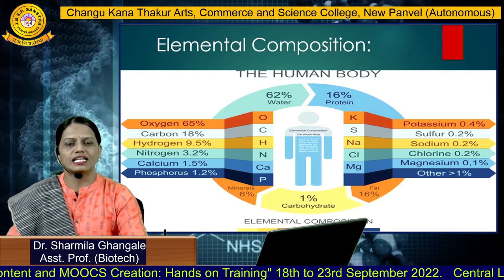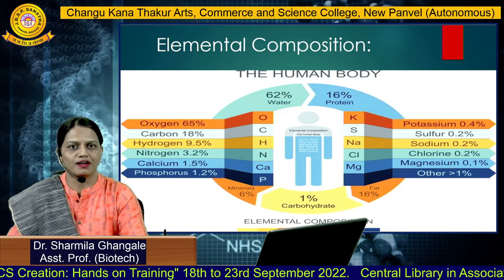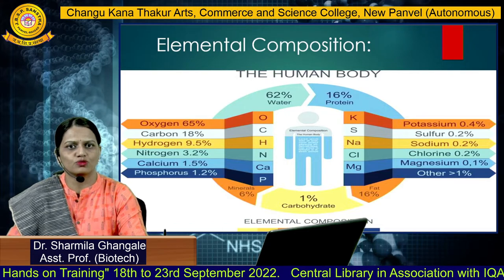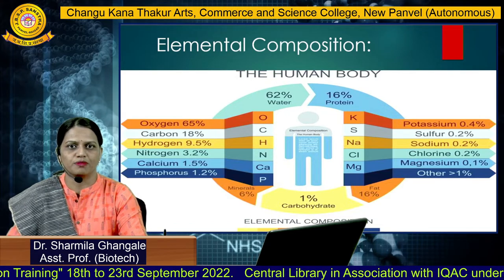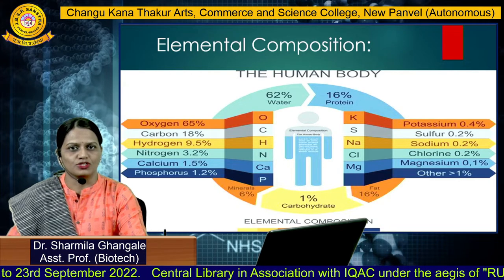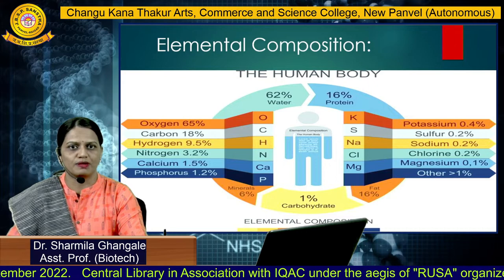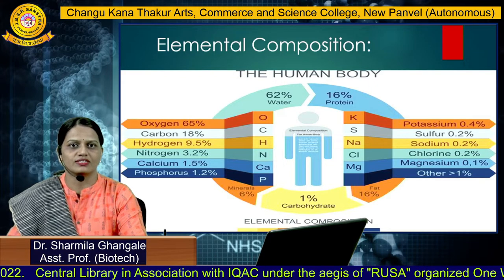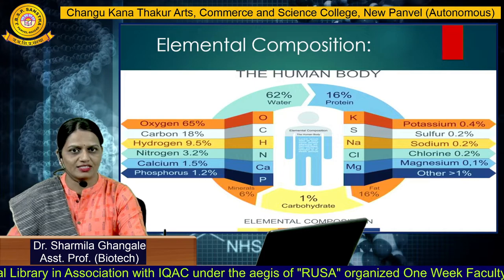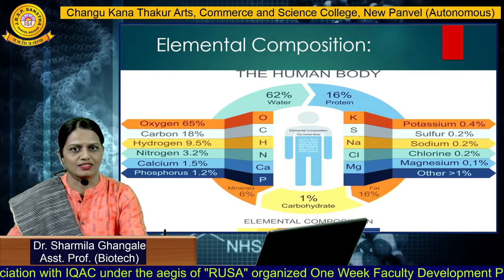As far as the elemental composition is concerned, the human body comprises various biomolecules. The human body is made up of biomolecules along with water as a major constituent. 62% water is present in the human body, along with 16% protein, 16% fats, 1% carbohydrate, and 6% minerals.